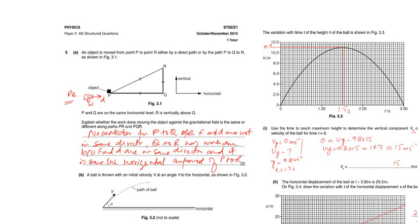An object is moved from point P to point R either by a direct path or by P to Q to R as shown. P and Q are at the same horizontal level and R is vertically above Q. Explain whether the work done moving the object against the gravitational field is the same or different along paths PR and PQR.